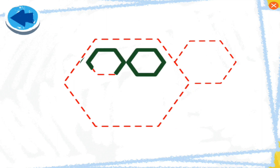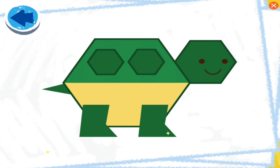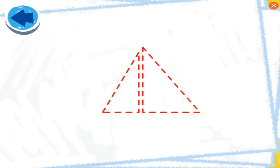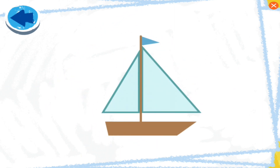This picture has hexagons! Boy, Elmo wonders what it is! Elmo loves making art with you! Cool! It's a turtle! This picture has triangles! Boy, Elmo wonders what it is! Elmo sees it's a sailboat.